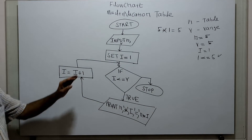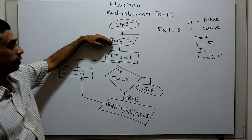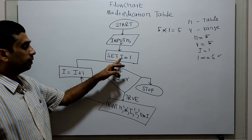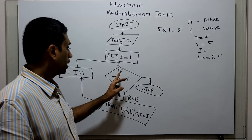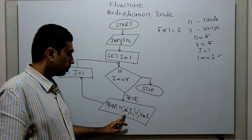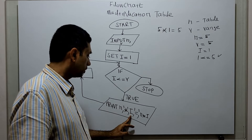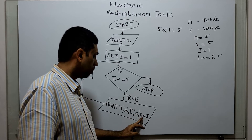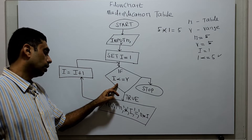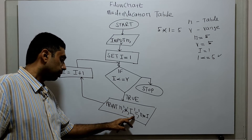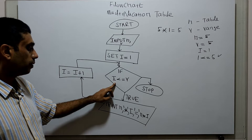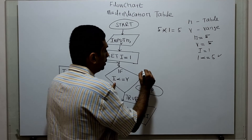So this is my flowchart: logical start, I am obtaining the values for n and r — n for the table, r for the range. I am initializing i equal to 1 and checking i less than or equal to r. If true, I am printing n, star as a string, i, equal to as a string, and n times i. Then I am incrementing i by 1, checking i less than or equal to r again — if true it will be printed with the incremented value of i.